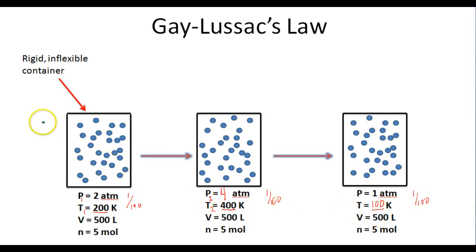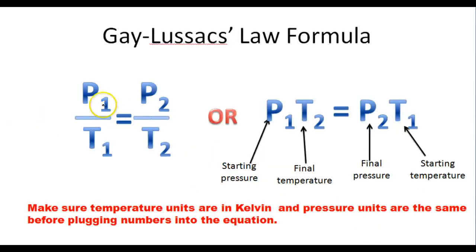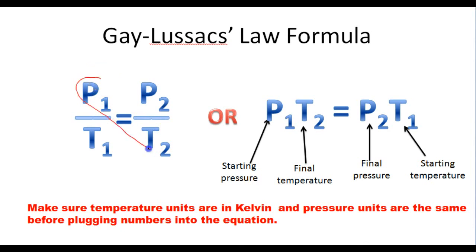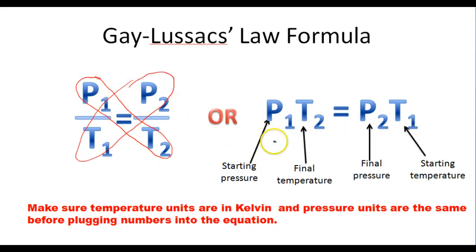Gay-Lussac's Law tells us that the starting pressure of a gas divided by the starting temperature will always equal the final pressure divided by the final temperature. If you don't like fractions, we can cross multiply to get the formula P1 T2 equals P2 T1, where P1 is the starting pressure, T2 is the final temperature, P2 is the final pressure, and T1 is the starting temperature.